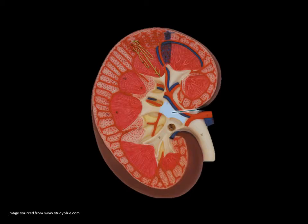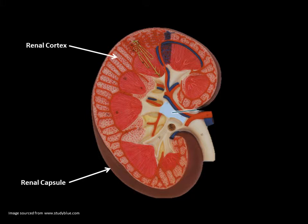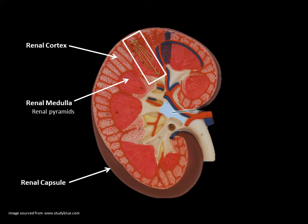Let's look at a cross section of the kidney and see where the nephron is actually located. Here we have the outer layer of the renal capsule and the inside is divided into two specific regions, the more superficial being the renal cortex and the inner being the renal medulla, of which it is compiled of segments called the renal pyramids. Here lies the nephron, situated in both the cortex and the medulla.